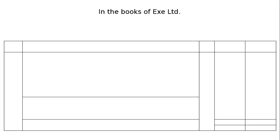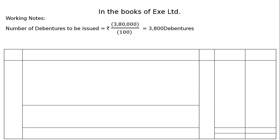In the books of EXE Limited — working notes. Number of debentures to be issued: Rs. 3,80,000 divided by 100, that is equal to 3,800 debentures.